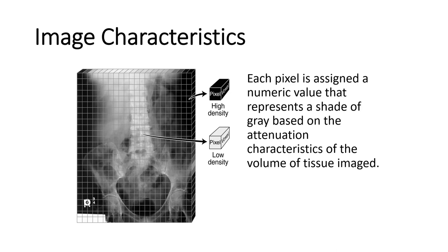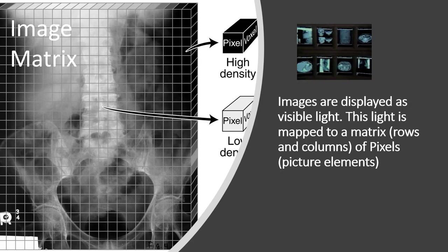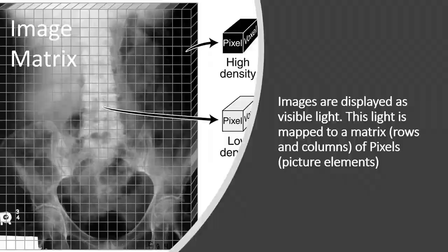Here we can see the intensities have been mapped to an image matrix. An image matrix is a matrix composed of rows and columns of pixels. And if we look at the depth, we also have voxels. Each pixel is assigned a numeric value that represents a shade of gray based on the attenuation profile, characteristics of the volume of tissue imaged. These images are displayed as visible light on a monitor.